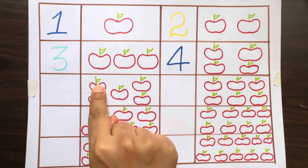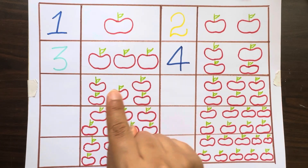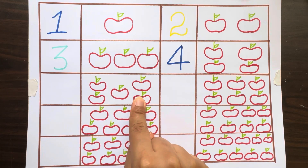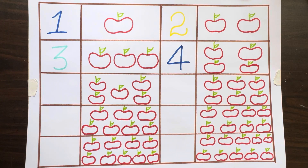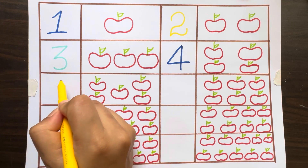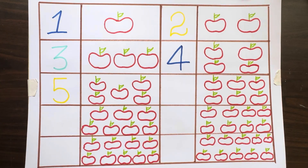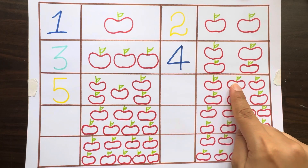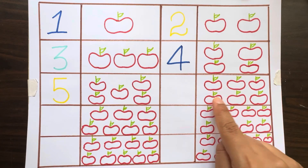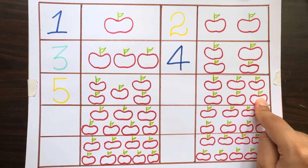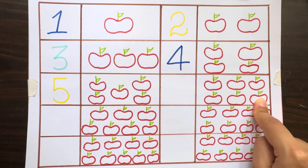One, two, three, four, five — in this box we have five apples, number five. One, two, three, four, five, six — in this box we have six apples.